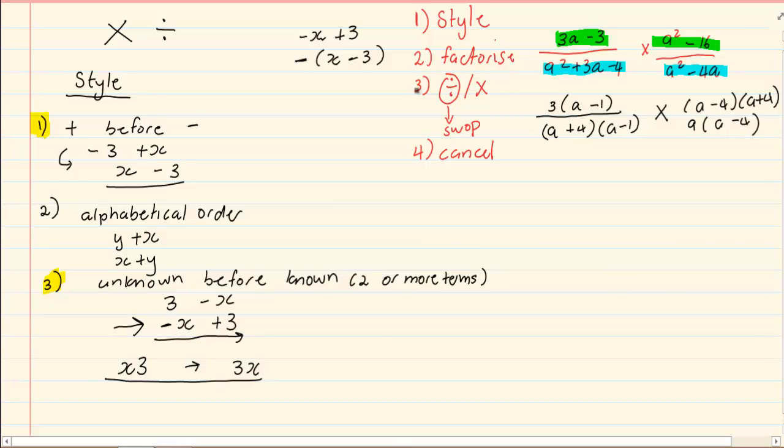Now once we factorized, there's no division. So we don't need to swap. We can now cancel. Remember when you're canceling, you can cancel anything from the top line with anything from the bottom line. It doesn't matter if it's coming from the first expression or the second expression. You can cancel anything from top and bottom. So I can cancel this a minus 1 with a minus 1 at the bottom. I can cancel the a plus 4 on the top with the a plus 4 at the bottom even though the one is on the left-hand side and the one is on the right-hand side.